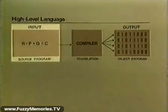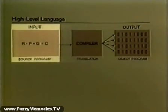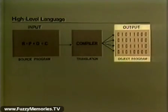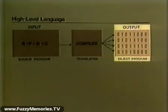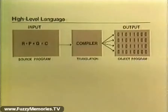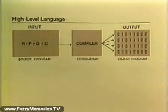Put another way, a compiler is a complex program which accepts a source program in symbolic language as input data, and produces an object program in the form of machine instructions as its output. This translation is necessary because today's computers can't accept source statements directly.